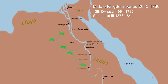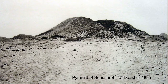Senusret the Third is a prime candidate, given the time he ruled and his building of Avaris, for being the actual pharaoh who met with Joseph when Joseph was taken into Egypt after being sold into slavery by his brothers. We are not going to cover that right now — there is no real historical evidence other than the fact that Avaris is there and later evidence. That is for another video. Senusret the Third also built his pyramid with secret passages, hidden doors, and false ceilings to hide the location of his actual tomb.